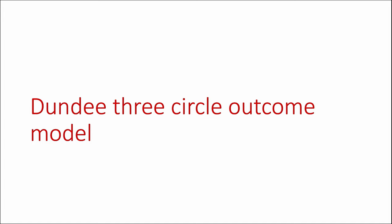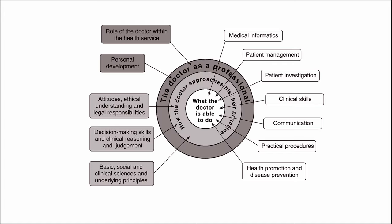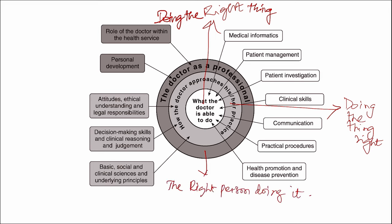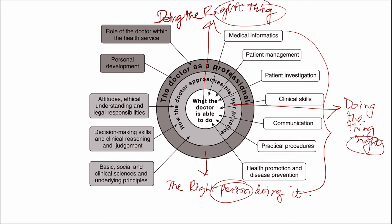Next is the Dundee three circle outcome model — the foundation for a competent and reflective practitioner, with three circles: the first is doing the right thing, the second is doing the thing right, and the third is the right person doing it. This model explains the right person doing the right thing right. Each circle has certain parameters to work on in order to achieve this outcome.